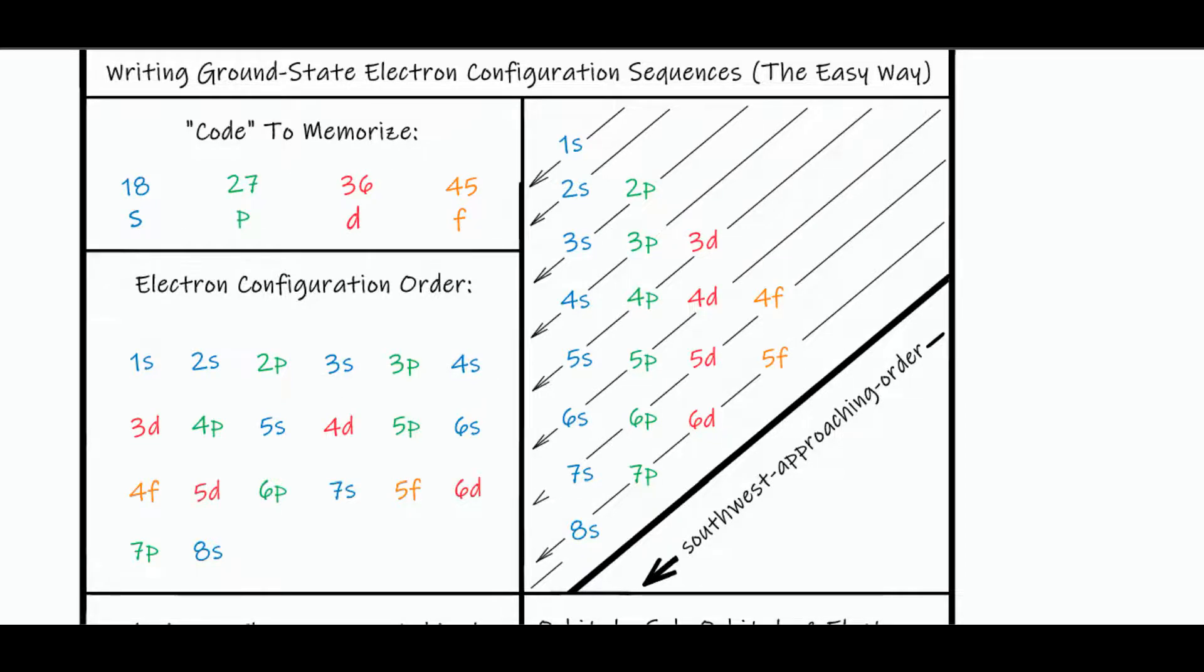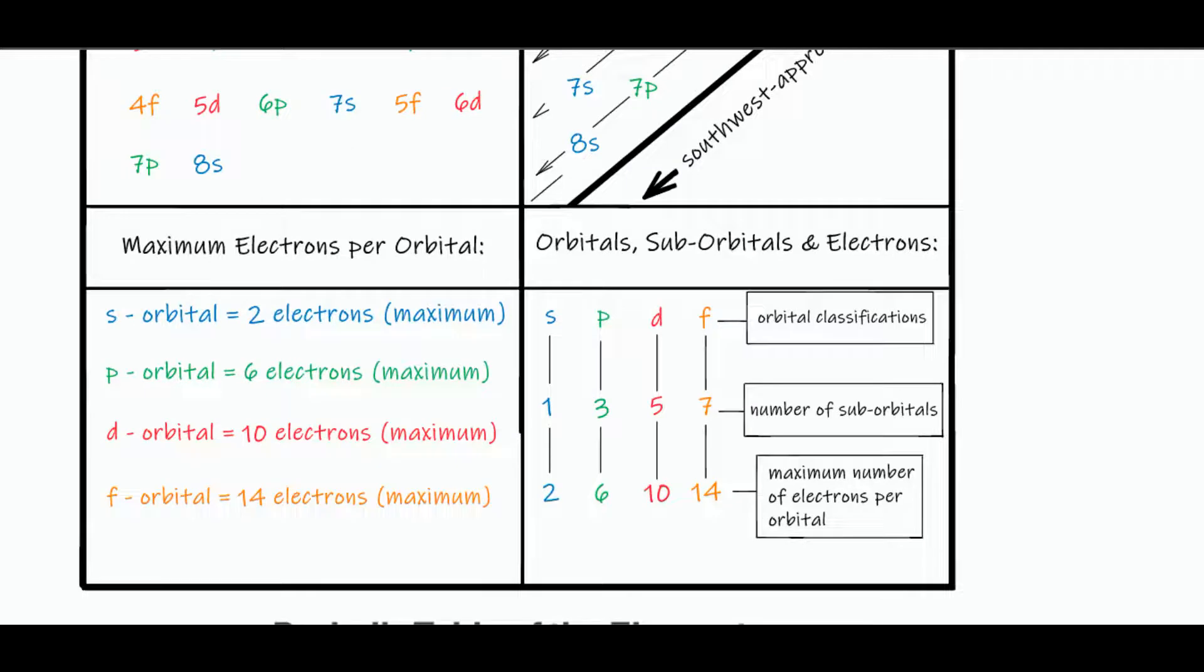And then, of course, you can use this chart here. I mean, draw this chart, 1, 3, 5, 7, 2, 6, 10, 14, for the number of electrons max per orbital.